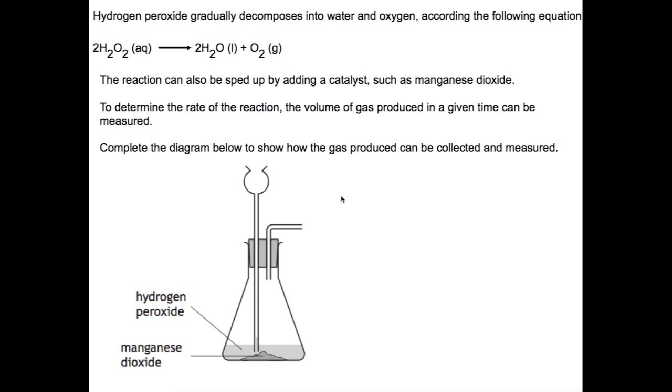So here is our first question. Hydrogen peroxide gradually decomposes into water and oxygen according to the following equation. The reaction can also be sped up by adding a catalyst such as manganese dioxide. To determine the rate of reaction the volume of gas produced in a given time can be measured. Complete the diagram below to show how the gas produced can be collected and measured.